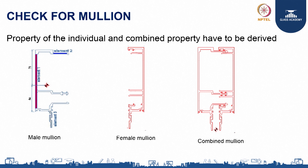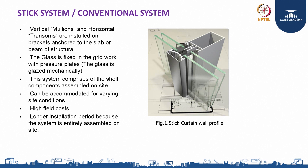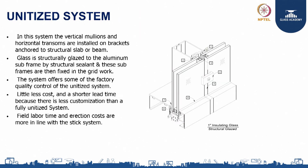Let us go to the mullion design. In unitized panels there are two components: the main mullion (male mullion) and the female mullion. These two mullions are combined together to form a single mullion. In the stick system, the profile is a closed single profile, whereas in the unitized system it consists of two different profiles — one and another — that are coupled together to form a single rectangular mullion.